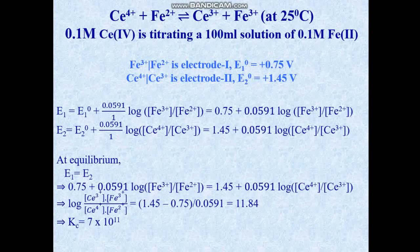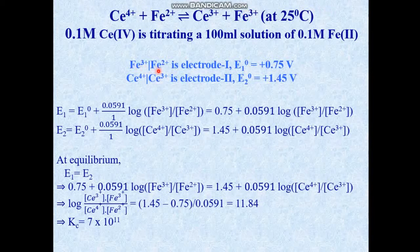In our first example, we have taken the cerium four-plus/cerium three-plus system and the iron three-plus/iron two-plus system. Just look at these two lines. System one is iron three-plus/iron two-plus — that is the ferric/ferrous ion — and system two is the ceric/cerous ion, that is cerium four-plus and cerium three-plus.